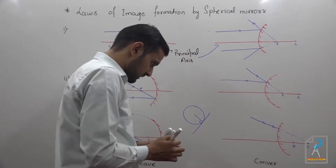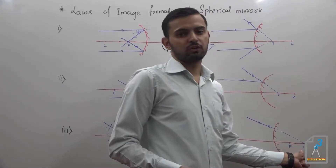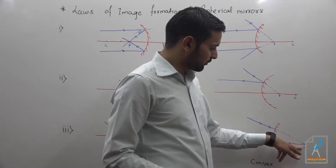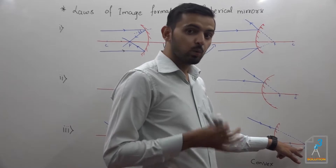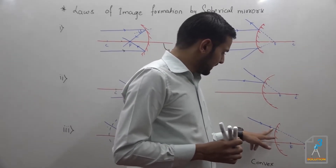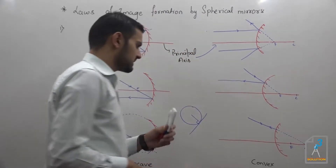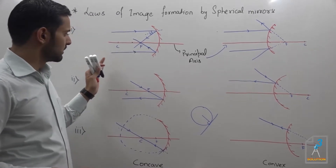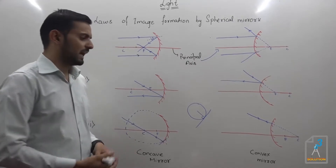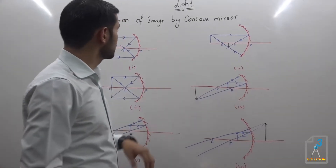For the convex mirror, if I make a light ray incident toward the center of curvature — which is virtual — after reflection it again retraces its own path. So these are the three basic fundamentals through which we will derive all the conditions regarding the concave and convex mirror.